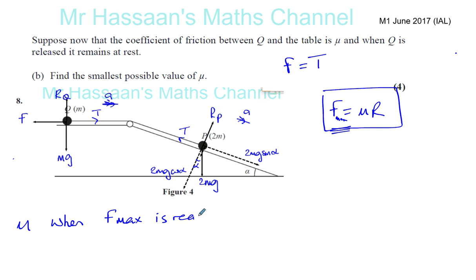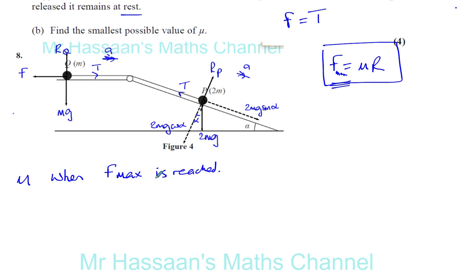And the system is going to be at rest. That means it's in equilibrium. That means there's no acceleration. So if we consider particle P, we can say that acceleration is equal to zero.